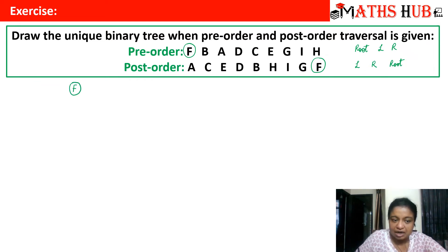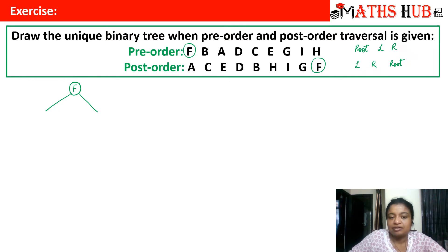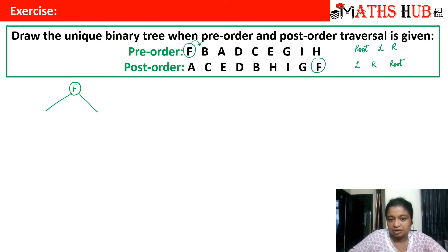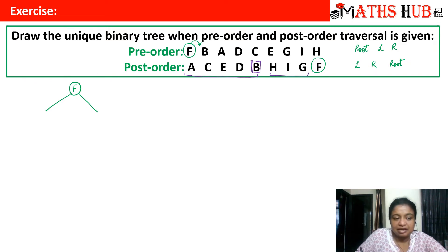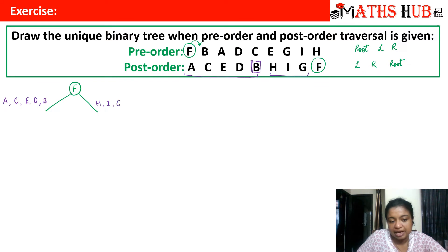Now we need to locate which vertices will come in the left subtree and which in the right subtree. Just see who is the immediate successor of the root vertex in the pre-order — the immediate successor is vertex B. Now locate B in the post-order and mark it with a different color for easy recognition. All the vertices from the start up to and including B will be in the left subtree: A, C, E, D, and B. All the vertices after B will be in the right subtree: H, I, and G.